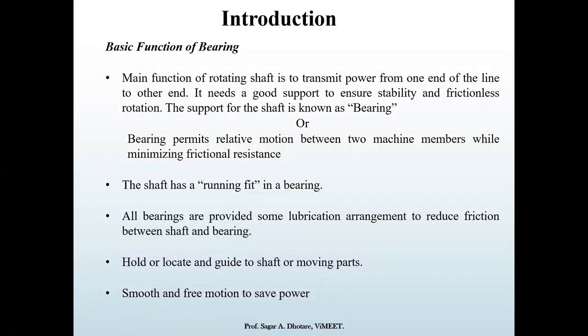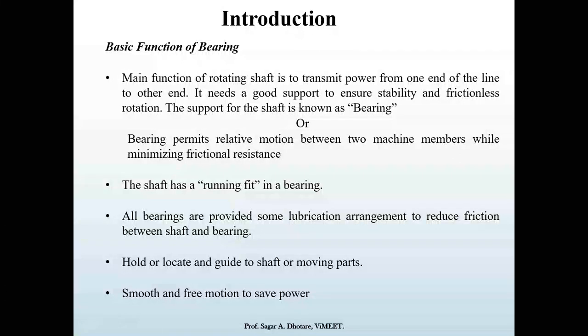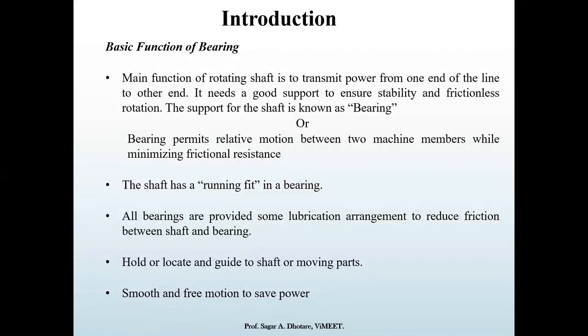First, it has to reduce the friction — or you can say, directly, frictionless rotation can occur between two meeting rotating parts. The second function is to give support to the shaft. In other words, a bearing permits relative motion between two machine members while minimizing the frictional resistance.